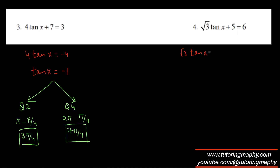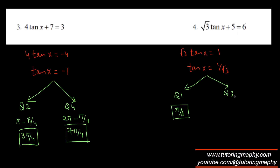Next equation: subtracting 5 from both sides gives 1, then dividing by √3 gives tan(x) = 1/√3. Tangent is positive in quadrant 1 and quadrant 3. The reference angle is π/6 from the unit circle. Quadrant 3 gives π + π/6 = 7π/6. So the two solutions are π/6 and 7π/6.